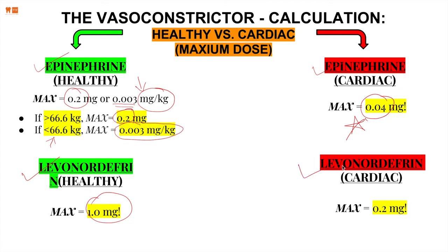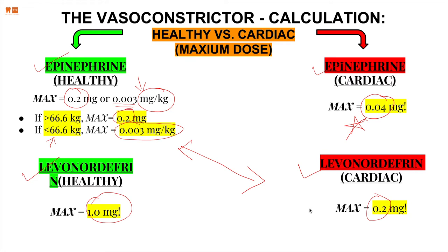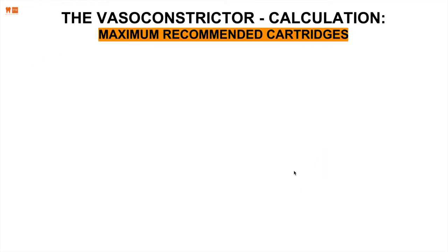For levonordefrine in a healthy patient, the maximum is 1.0 milligram. For a cardiac patient, levonordefrine is capped at 0.2 milligrams. A useful pattern to remember: in a healthy patient, epinephrine maximum is 0.2 mg; in a cardiac patient, levonordefrine maximum is also 0.2 mg. These patterns make it easier to recall the values under exam conditions.